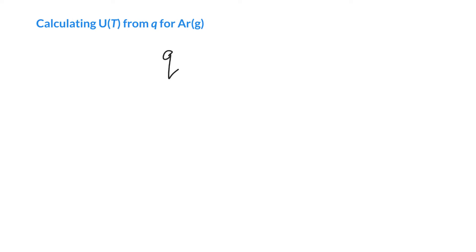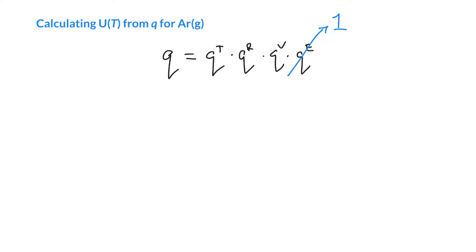Let's try and calculate an internal energy using a partition function for argon. We can write the molecular partition function as a product of the translational, the rotational, the vibrational, and the electronic. The electronic we can set to one — no unpaired electrons, so it's a singly degenerate ground state. There are no vibrations and no rotations, so these all come out to one. The only thing we really have to concentrate on is the translational partition function.